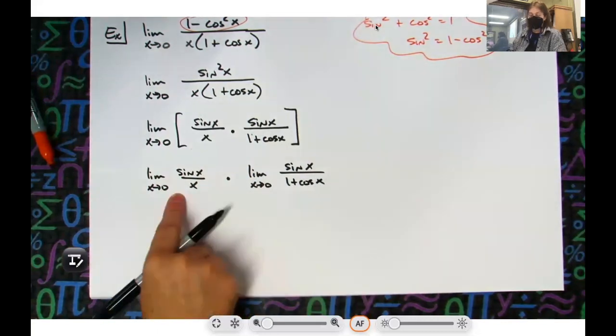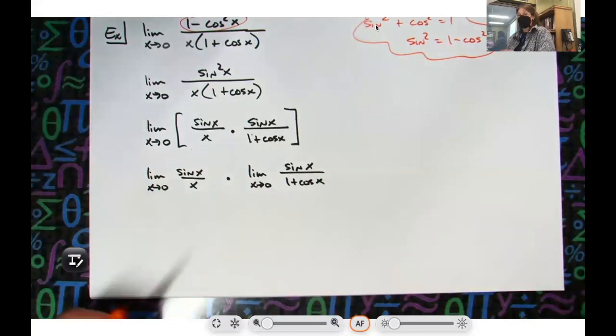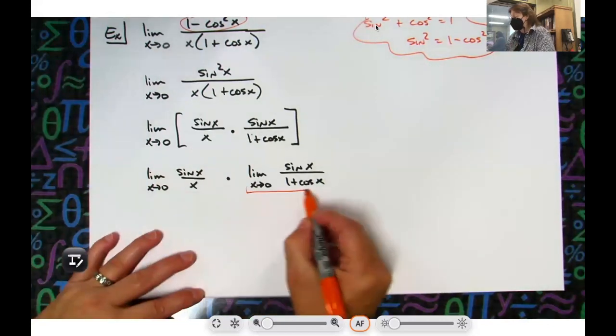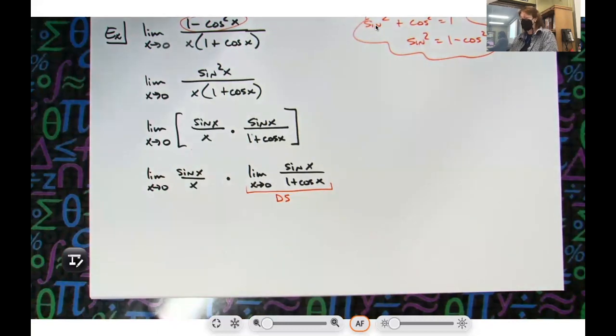All right, this one we know it's 1. This one over here, we don't have a property for it. So again, we're going to do that direct substitution. We're going to plug that 0 in to see what happens.